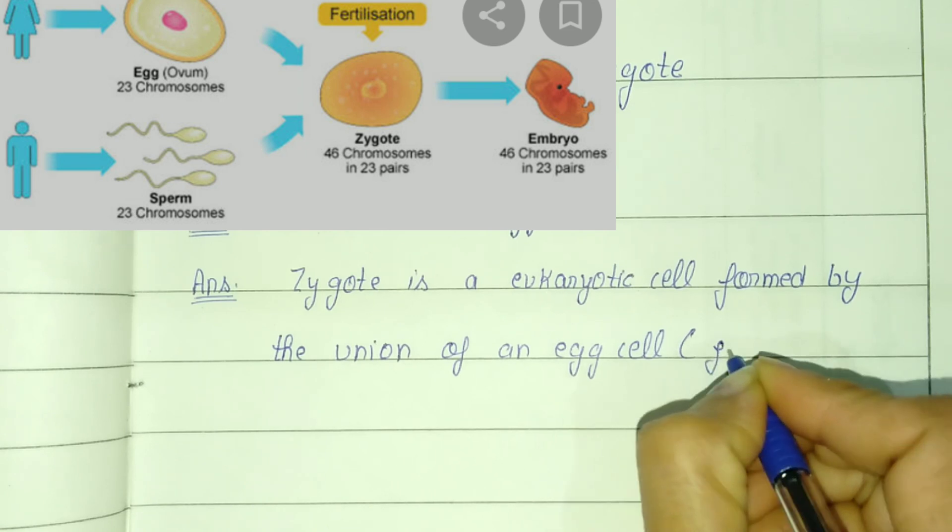Zygote develops into embryo, embryo develops into fetus, and fetus develops into baby.